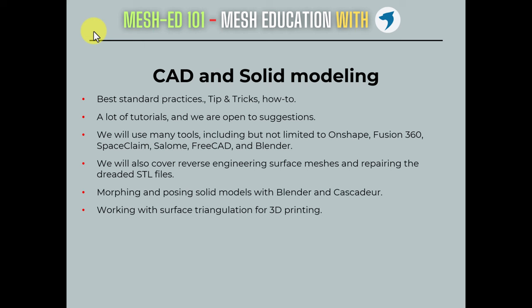We're going to address reverse engineering of surface meshes. You can have a triangulation that comes from point clouds using lasers, reverse engineer it, bring it back into your computer, and create CAD from that. We'll also look at morphing and solid models using Blender, and there is this new tool Cascadeur — it's an impressive tool that does amazing things, more oriented toward the film industry for creating visual effects.